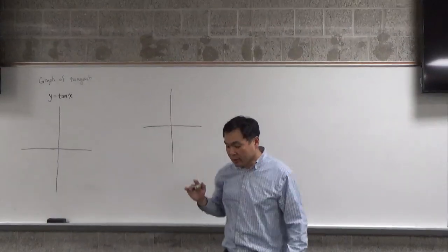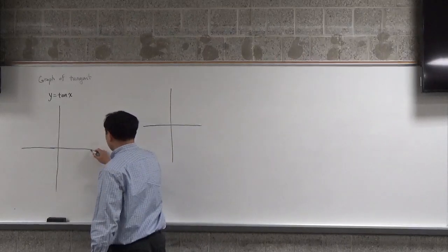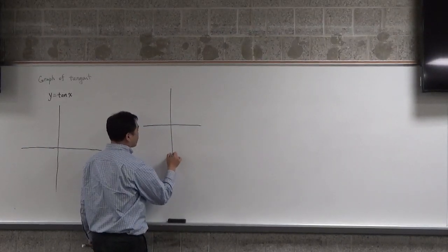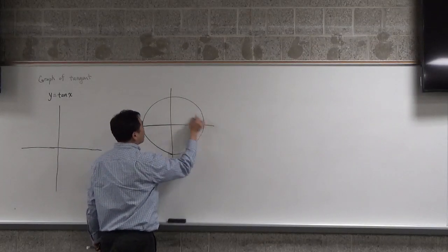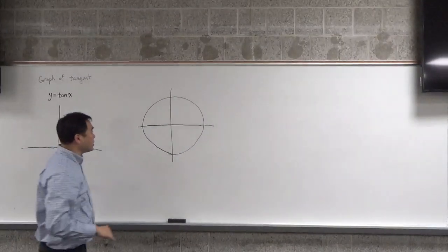Okay, what we aim to do now is to draw the graph of the tangent function. And we will use the fact that on the unit circle, the tangent corresponds to the slope, the slope of the line.